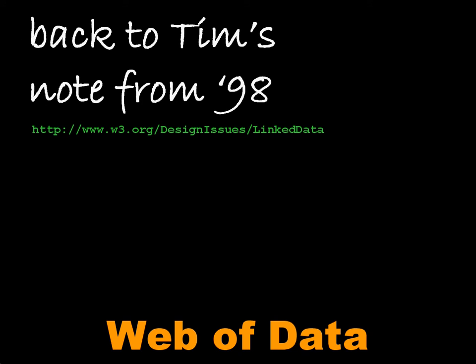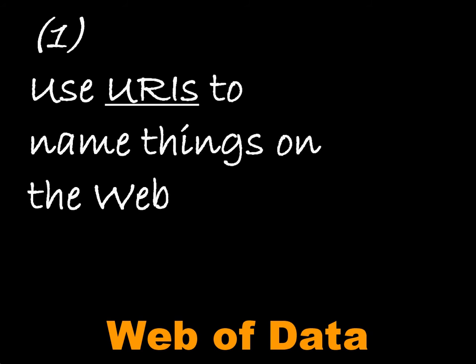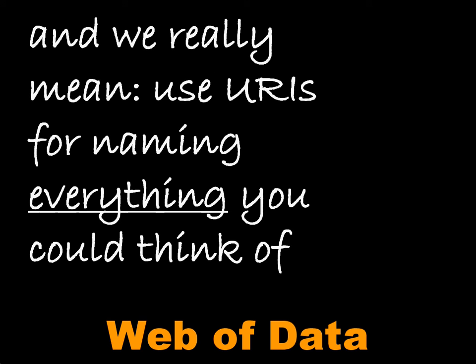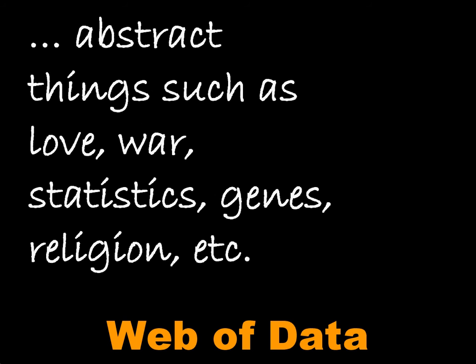Back to Tim's note from 1998. Four principles are discussed there. First, use URIs to name things on the web — and we really mean use URIs for everything. Use URIs for people, fruits, cars, drinks, islands and so on. But also for abstract things, such as love, war, statistics, genes, religions and so on.